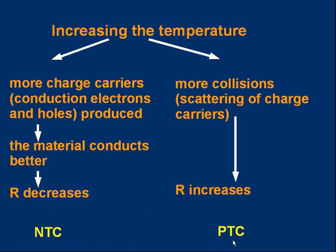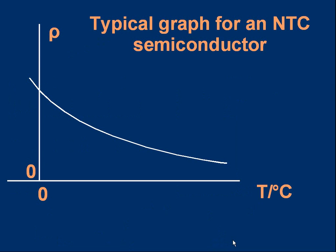For an NTC semiconductor, this would be a typical graph showing the resistance or resistivity as temperature changes. It drops and it's non-linear, it's a curve.